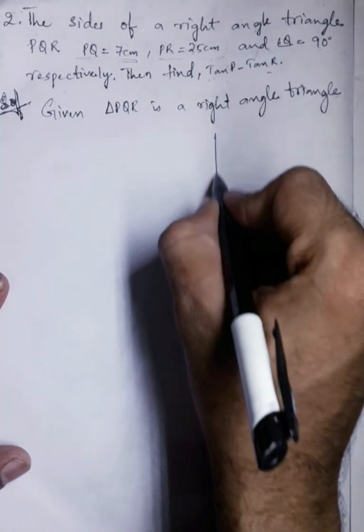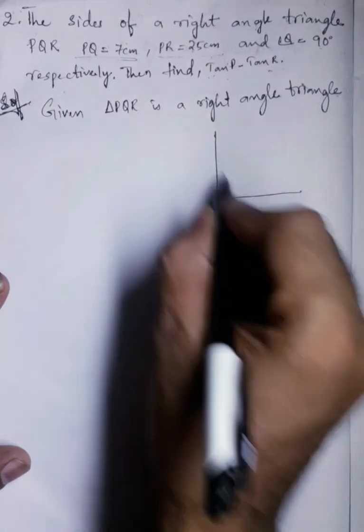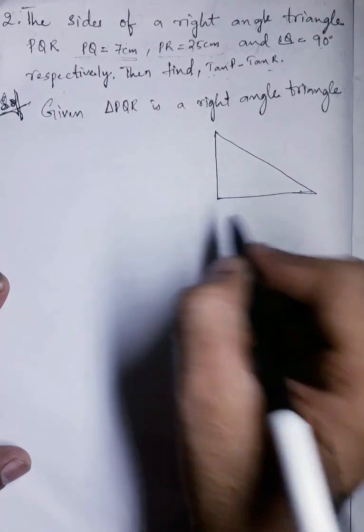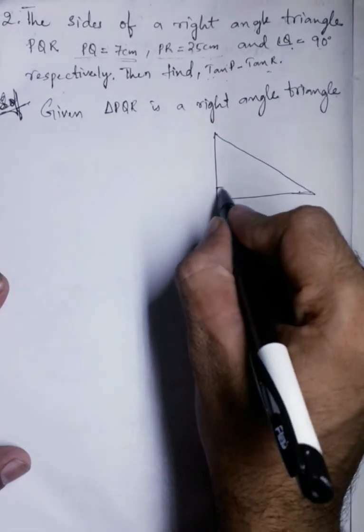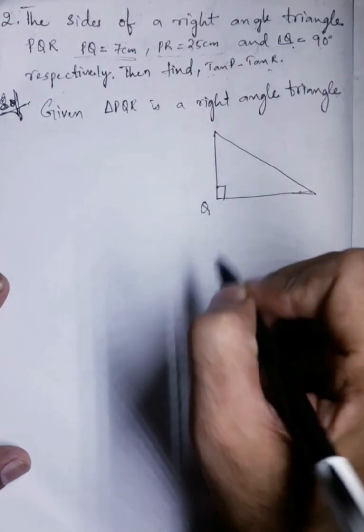Right angle triangle means one of the angles is 90 degrees. So let us draw one triangle. Here they have given Q is 90 degrees, so angle Q is 90 degrees.